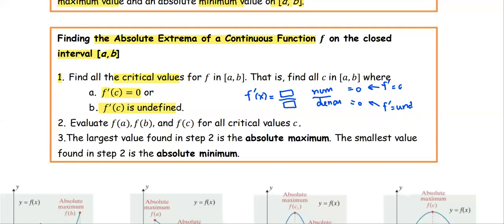After step one, step two: evaluate the function value at the left endpoint, the right endpoint, and at all critical values c obtained from step one. The last step: take the largest value to be the absolute maximum and the smallest value to be the absolute minimum.